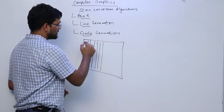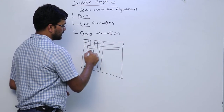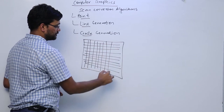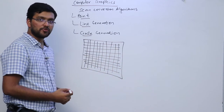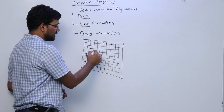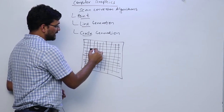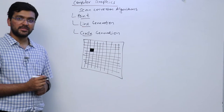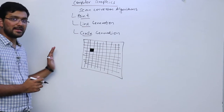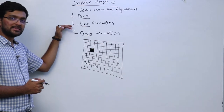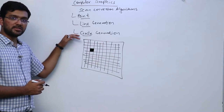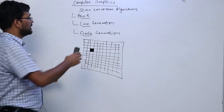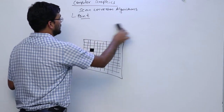As we know, our computer screen is divided into a number of pixels — we have an array of pixels like this. If we have to draw a point, that means we have to fill up a pixel like this. A point is also known as a pixel in computer graphics. We will be seeing in detail how do we fill these points, how do we draw a line, how do we draw a circle on our screen.